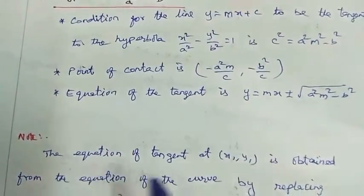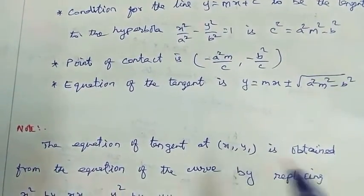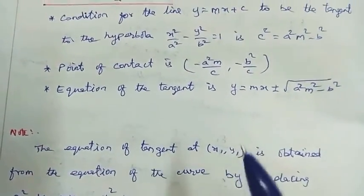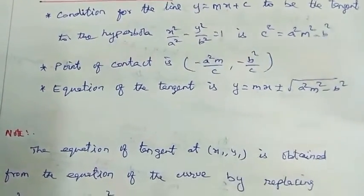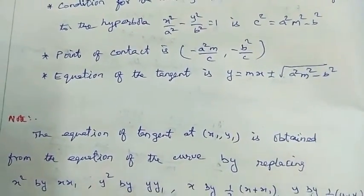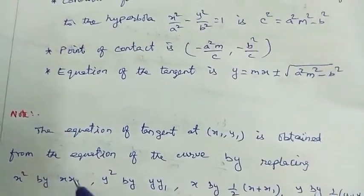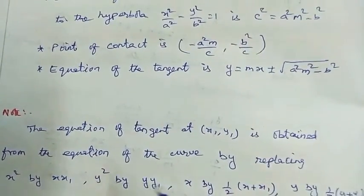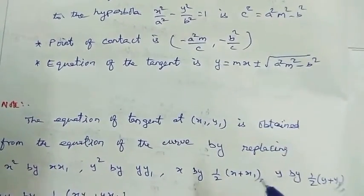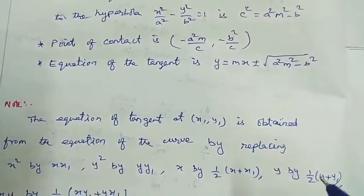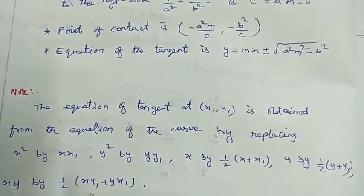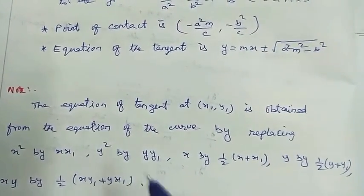Note: the equation of the tangent at the point x1, y1 is obtained from the equation of the curve by replacing x square by x x1, y square by yy1, x by one half of x plus x1, y by one half of y plus y1, and xy by one half of x y1 plus y x1.